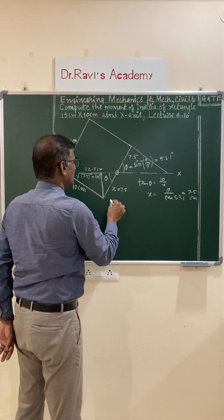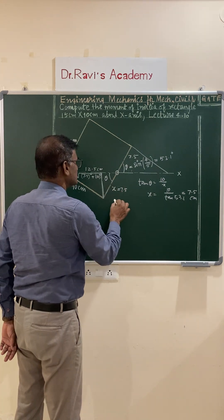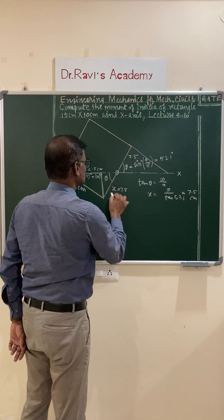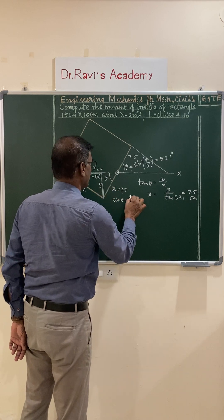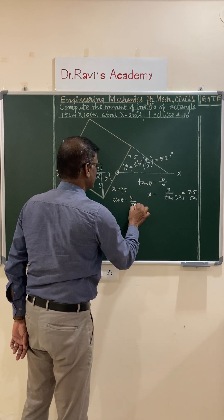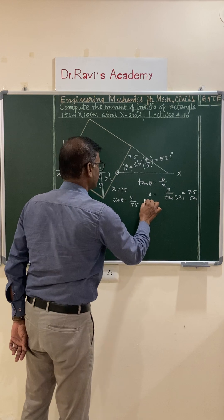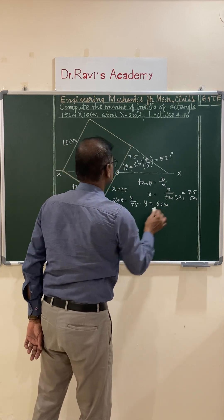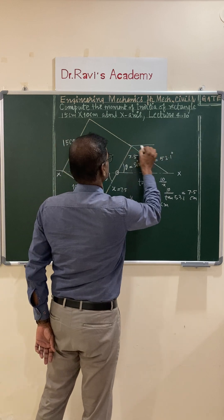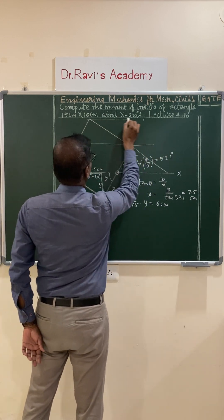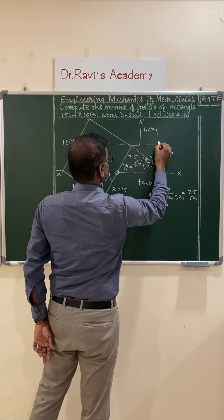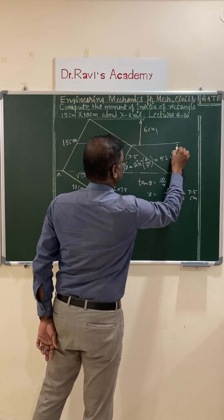This height, if you calculate - the opposite side is, you can write down, sin theta. So sin theta equals this y value divided by 7.5. You're going to get y value as 6 centimeters. So this is also 6 centimeters. That means this is also 6 centimeters. It is 6 centimeters and this is also 6 centimeters.